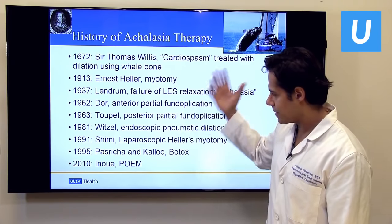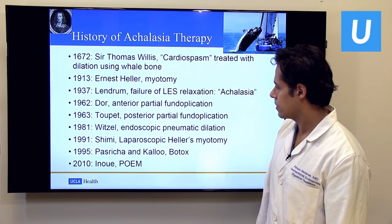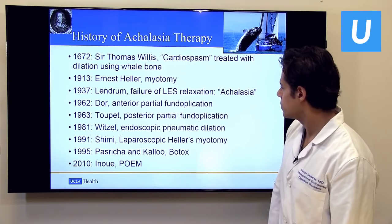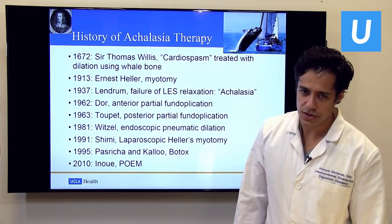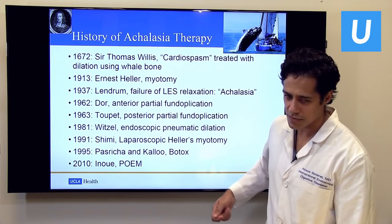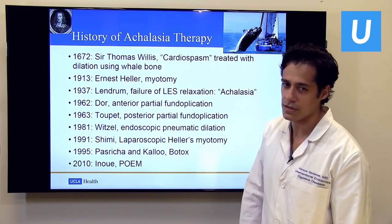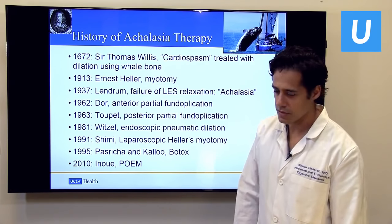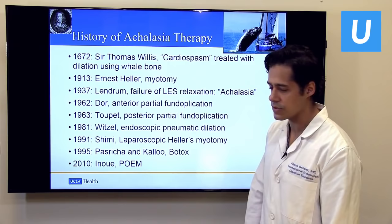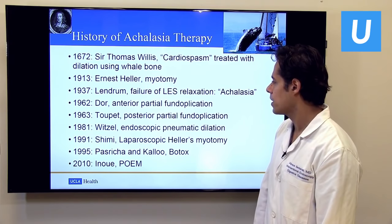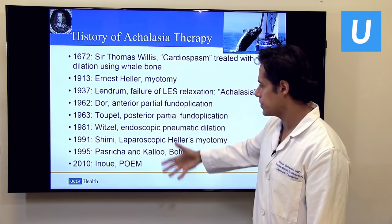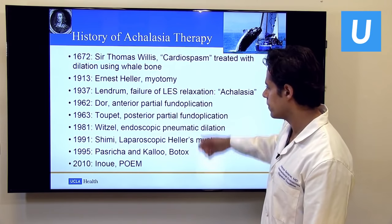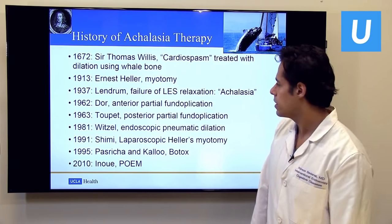For a bit of history: achalasia was described four or five hundred years ago by Sir Thomas Willis, who called it cardiospasm and treated patients by fashioning a whale bone into a stiff dilating rod. That approach persisted for about 300 years until Dr. Ernest Heller showed how to do a myotomy — a surgical way to cut the muscle to relieve the spasm. Over the 20th century, modifications included making it laparoscopic and adding a fundoplication as an anti-reflux procedure.